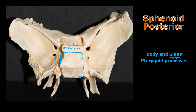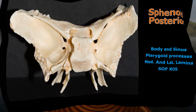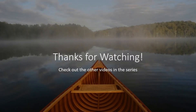What's new to us completely here are probably these structures hanging down — you could call them the feet of the bat. These are called the pterygoid processes. There are two parts: there's a medial part, the medial lamina, and then the lateral lamina of the pterygoids. If you enjoyed that talk, check out another one. Thanks for watching, see you for the next one.